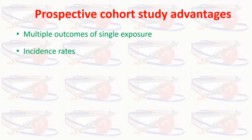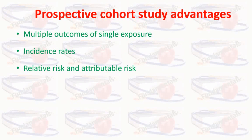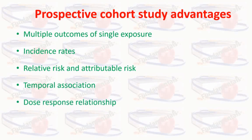Incidence rates are calculated in these studies — we can see new cases. It helps in calculating the relative risk and the attributable risk. Temporal association is best studied in prospective cohort study. It allows the assessment of dose-response relationship. Some other advantages are that researchers have complete control over the data and it helps to accept or refuse the hypothesis with a high degree of validity.